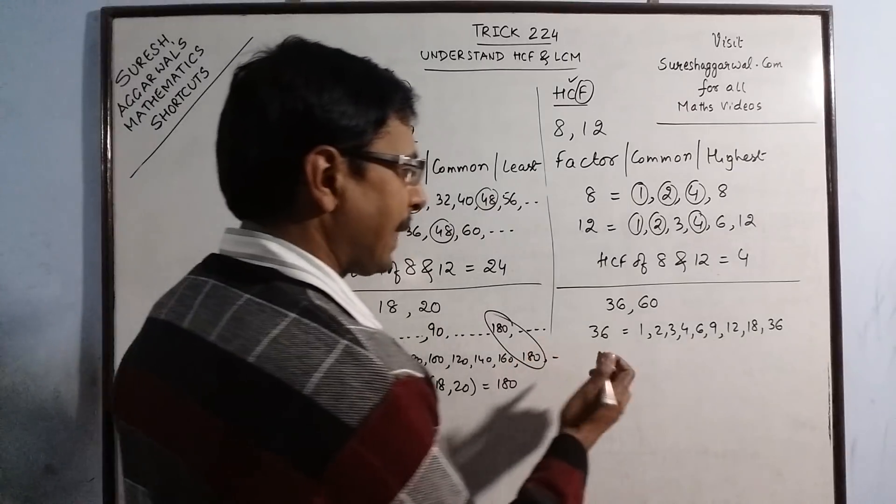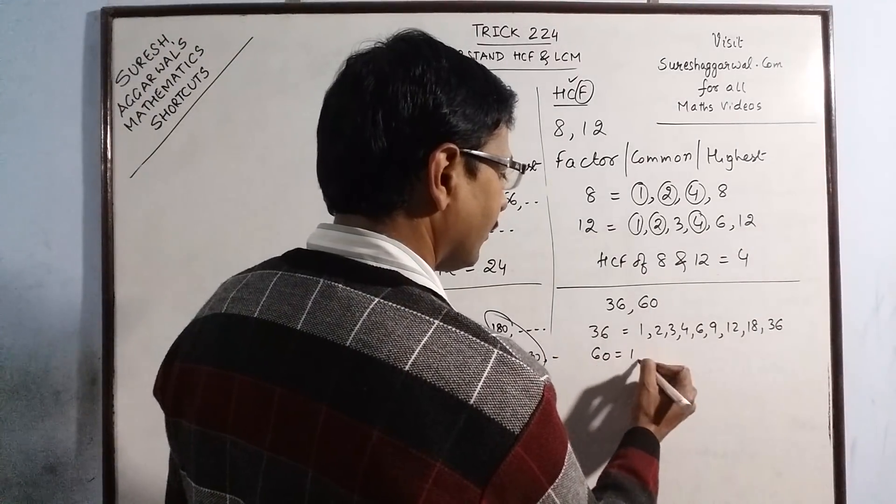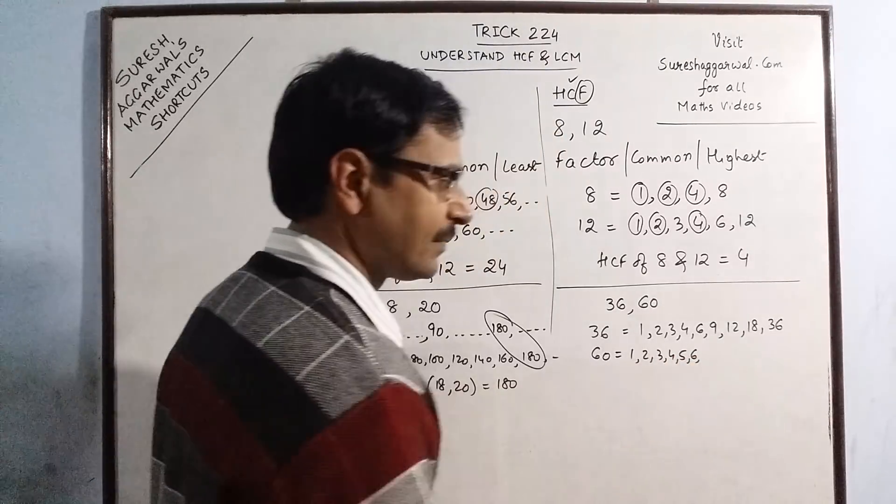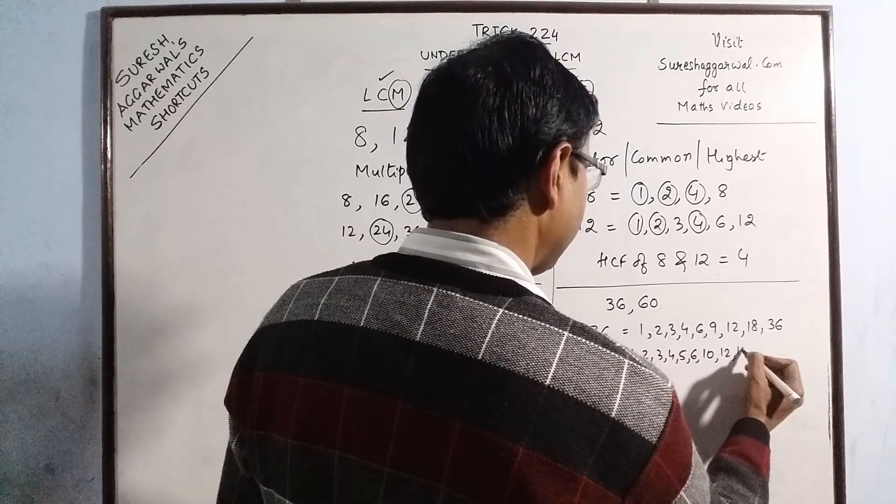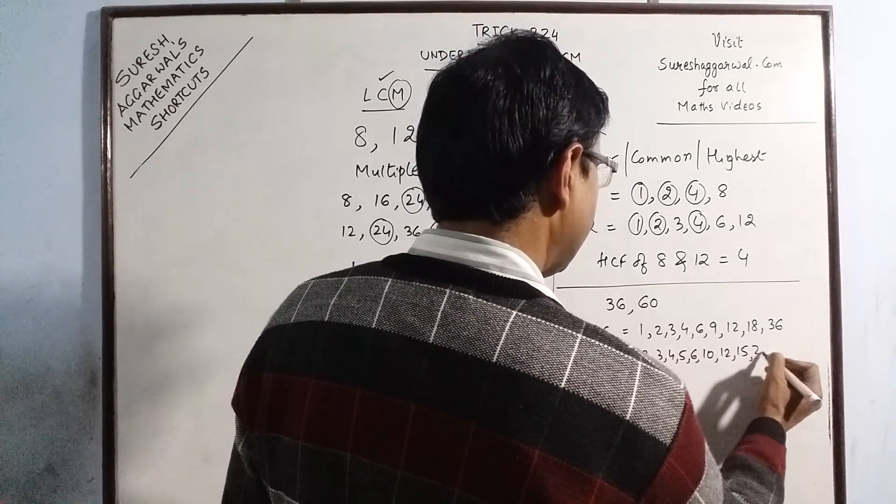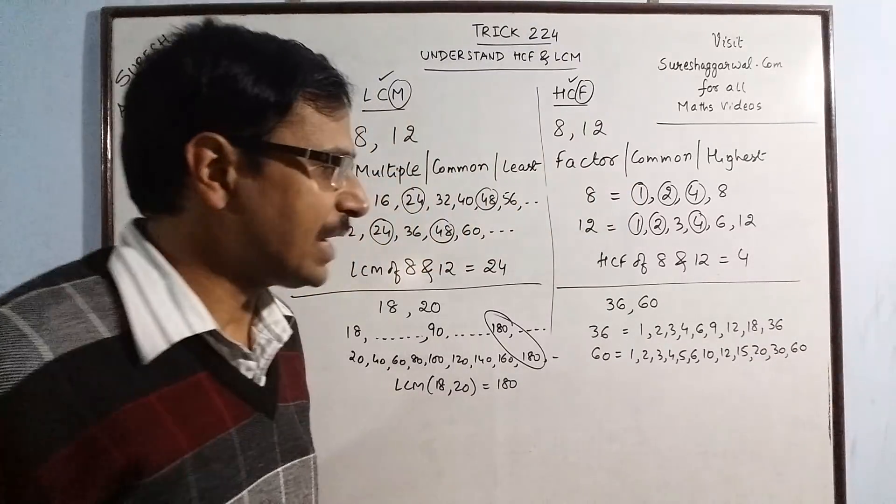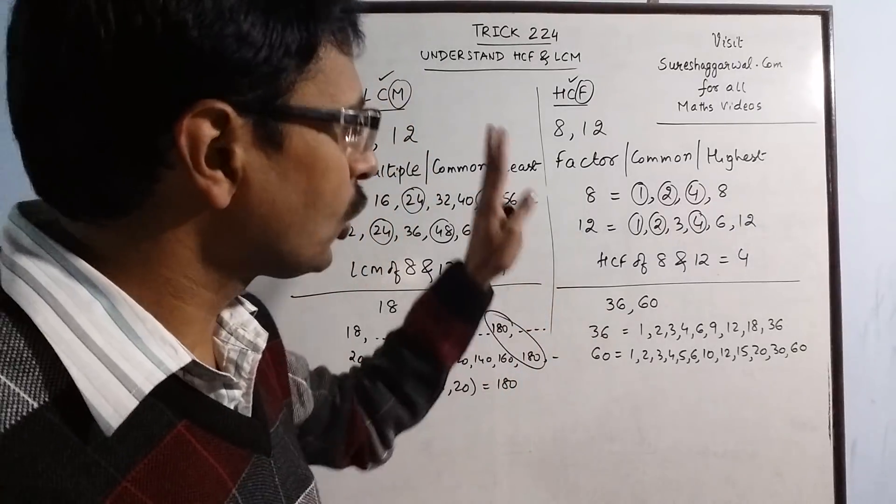Similarly, 1, 2, 3, 4, 5, 6, 10, 12, 15, 20, 30, 60. Now see, I have written all the factors of 60. Now just check which is the common factor.